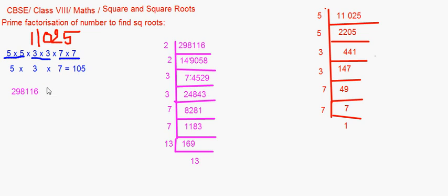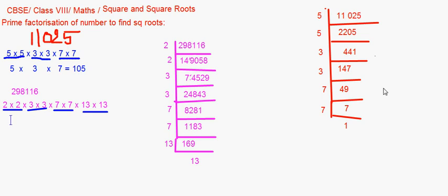So 298116 expressed as a product of prime factors is 2 × 2 × 3 × 3 × 7 × 7 × 13 × 13. Making pairs of each: a pair of 2s, 3s, 7s, and 13s. Taking one from each pair and multiplying: 2 × 3 × 7 × 13 = 546. So 298116 is the square of 546.